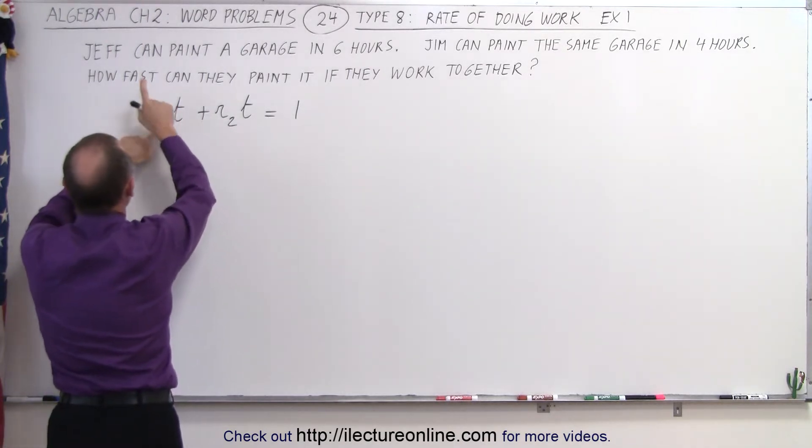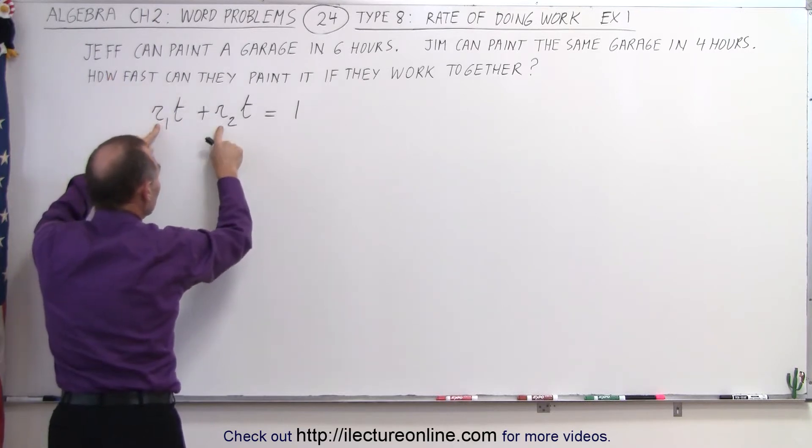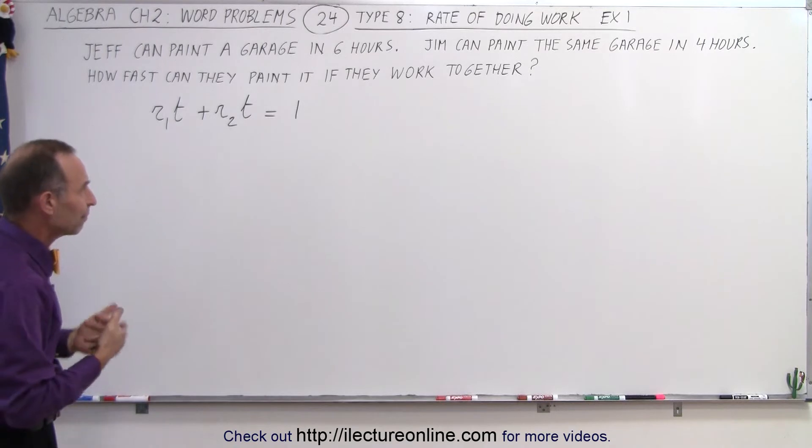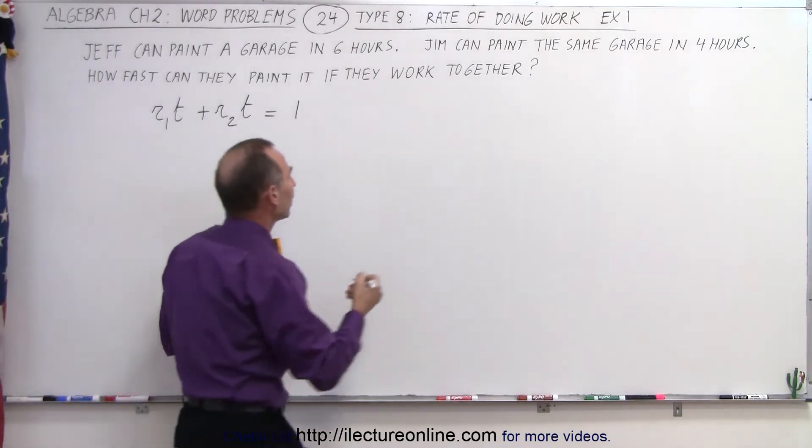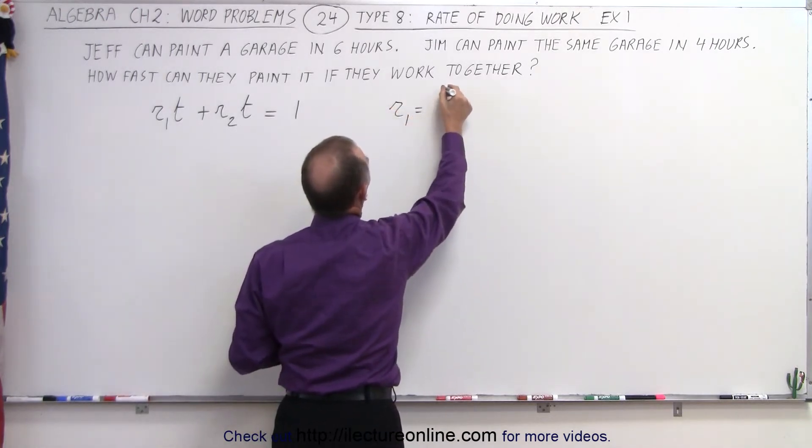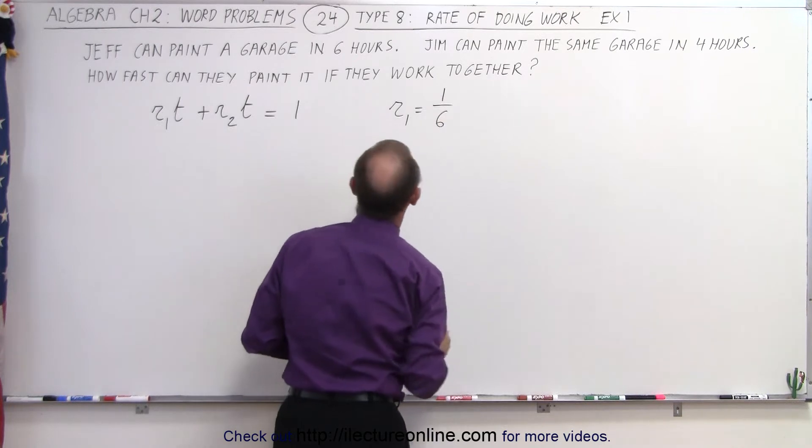R1 represents how fast Jeff can paint. And R2 represents how fast Jim can paint. That's the rate at which they can paint. So how do you come up with the value for R1 and R2? Well, it turns out that R1 is equal to one over six.